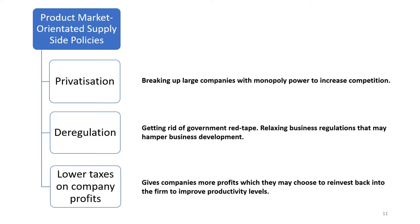The privatisation of various large industries such as telecommunications, electricity, and gas was designed to break up state monopolies and create more competition. Introducing competition into what were previously state monopolies forces these new privatised firms to compete with rival companies without state backing. This forces companies such as BT, privatised in 1984, or Royal Mail, privatised in 2014, to cut costs and increase productivity wherever possible to maintain competitiveness in private markets. Now that these companies are privatised, they no longer have state support to survive, so they must prioritise productivity and productive efficiency far more.